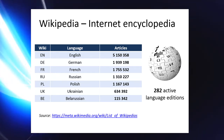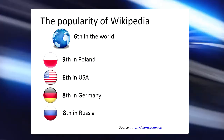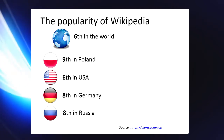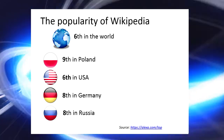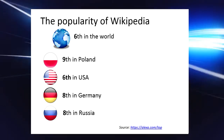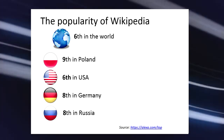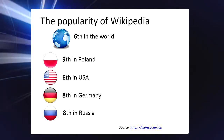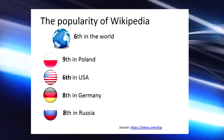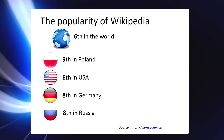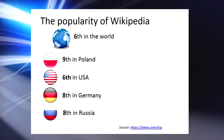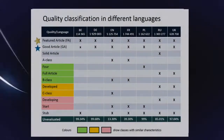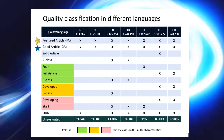This online encyclopedia has become one of the most important sources of knowledge throughout the world. In April 2016, the number of visits amounted to 282 million per day across all language versions. In the ranking of the most popular websites, Wikipedia occupies sixth place in the world.